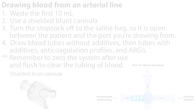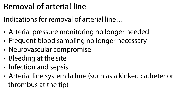Indications for removal of an arterial line include: arterial pressure monitoring is no longer needed, frequent blood sampling is no longer necessary, neurovascular compromise, bleeding at the site, infection and sepsis, and arterial line system failure such as a kinked catheter or a thrombus at the tip.